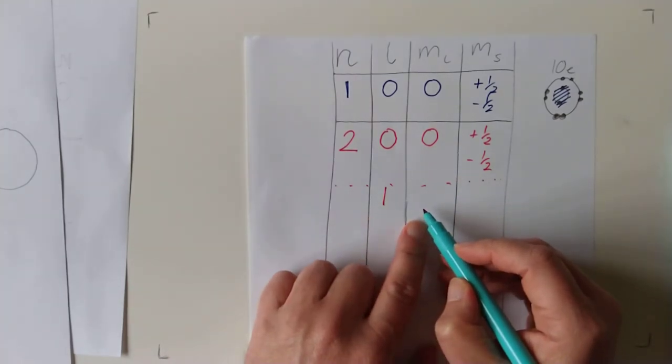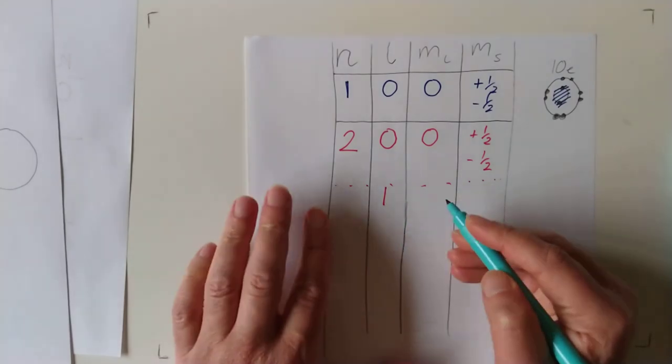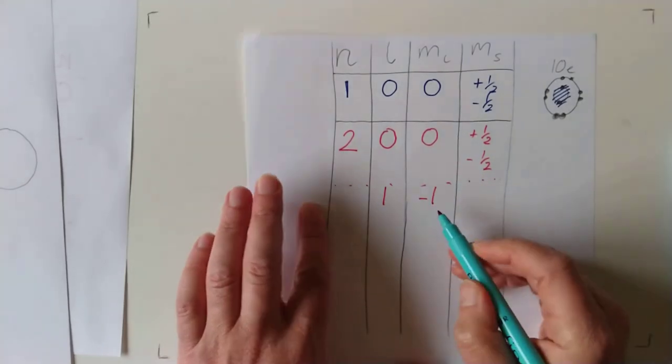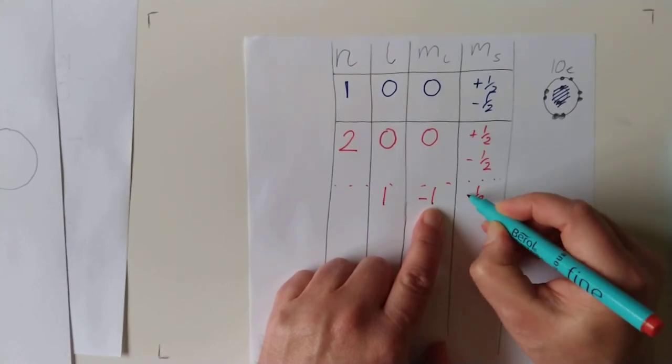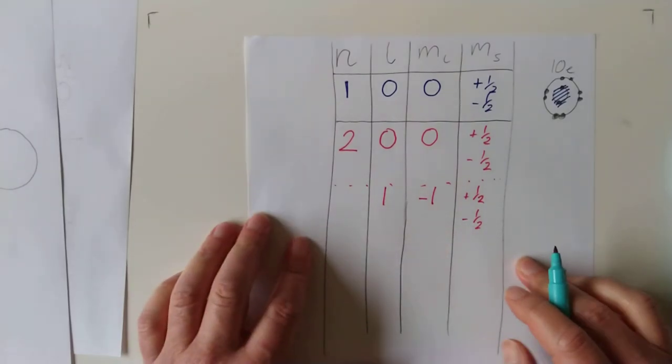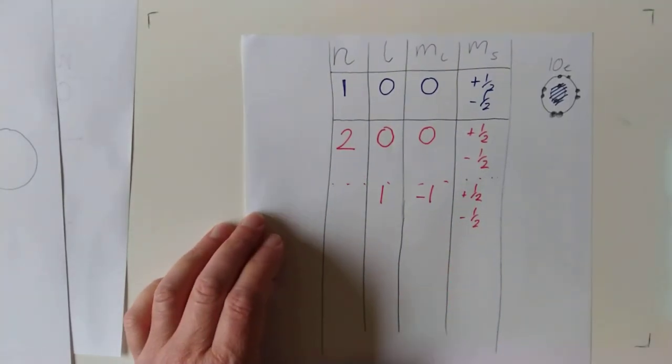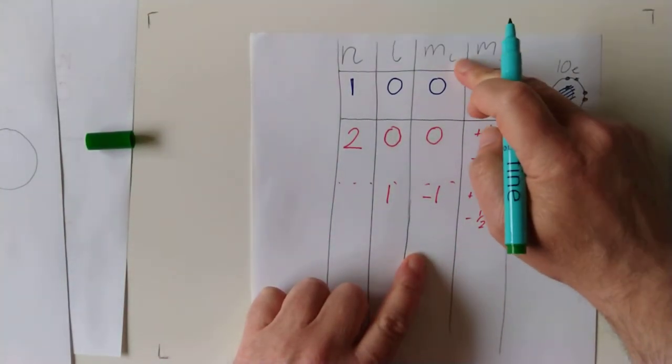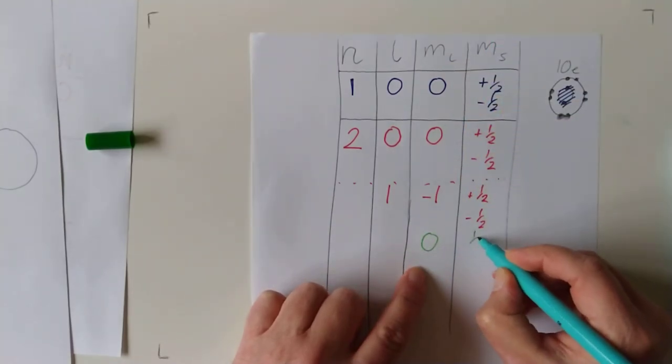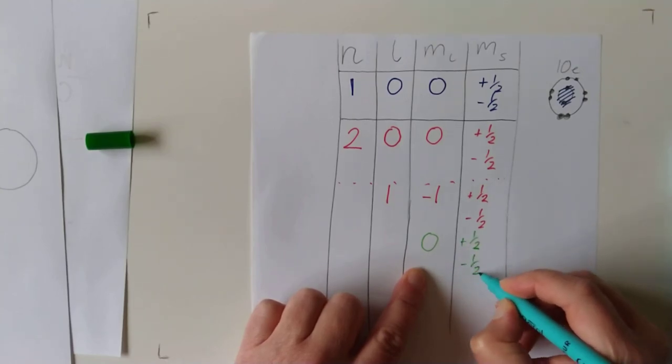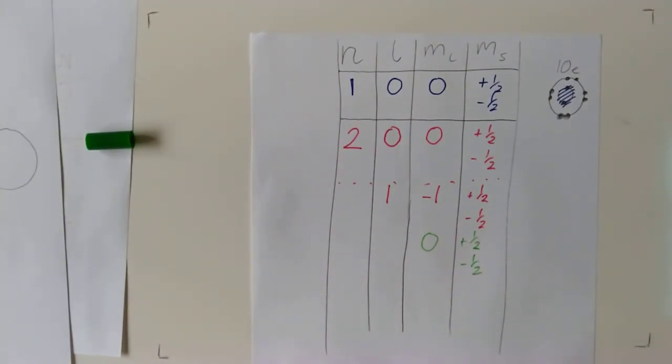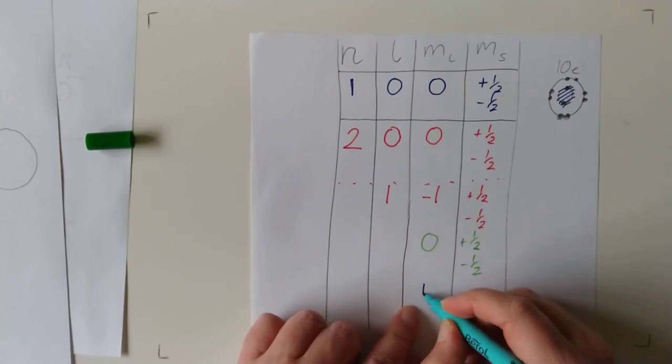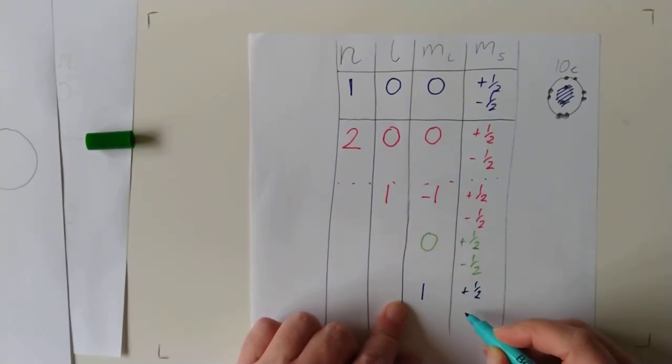If we're done now for these ones, as it were, but what about this value of L? Well, ML can be negative 1, 0, and plus 1. So, let's set ML to be negative 1. And for this value, you can have plus 1 half, and you can have minus 1 half. Now, we'll change up to ML being 0. And we can have plus 1 half, and minus 1 half. Lastly, let's have the third value for ML, which is plus 1. And you can have plus 1 half, minus 1 half.